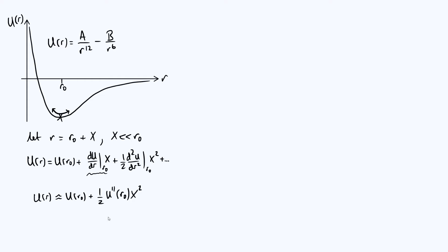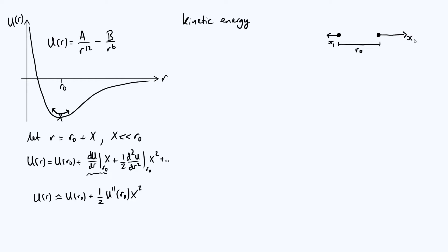Now we want to think about the kinetic energy of the system. To write the kinetic energy of the molecule it's necessary to define a few new quantities. We have two atoms at equilibrium separation R₀. We pull the left atom to the left by an amount x₁ and the right atom to the right by an amount x₂, and define the masses of these atoms as m₁ and m₂. The arrows for x₁ and x₂ are drawn as different lengths because in general they won't be the same.